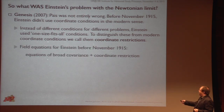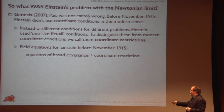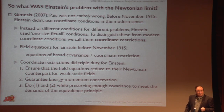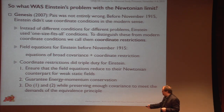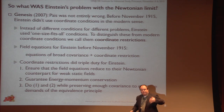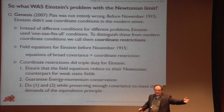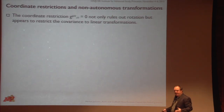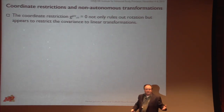To highlight this very idiosyncratic use of coordinate conditions, we call them coordinate restrictions. The field equation for Einstein before November 1915 is always broadly covariant equations plus a coordinate restriction. And these coordinate restrictions have to do triple duty for Einstein: first, they have to ensure the Newtonian limit; Einstein also thought they were needed to guarantee energy-momentum conservation; and moreover, they have to maintain enough covariance to do justice to the equivalence principle. That's a tall order. So Einstein went through many of these coordinate restrictions and found again and again that they just didn't work.